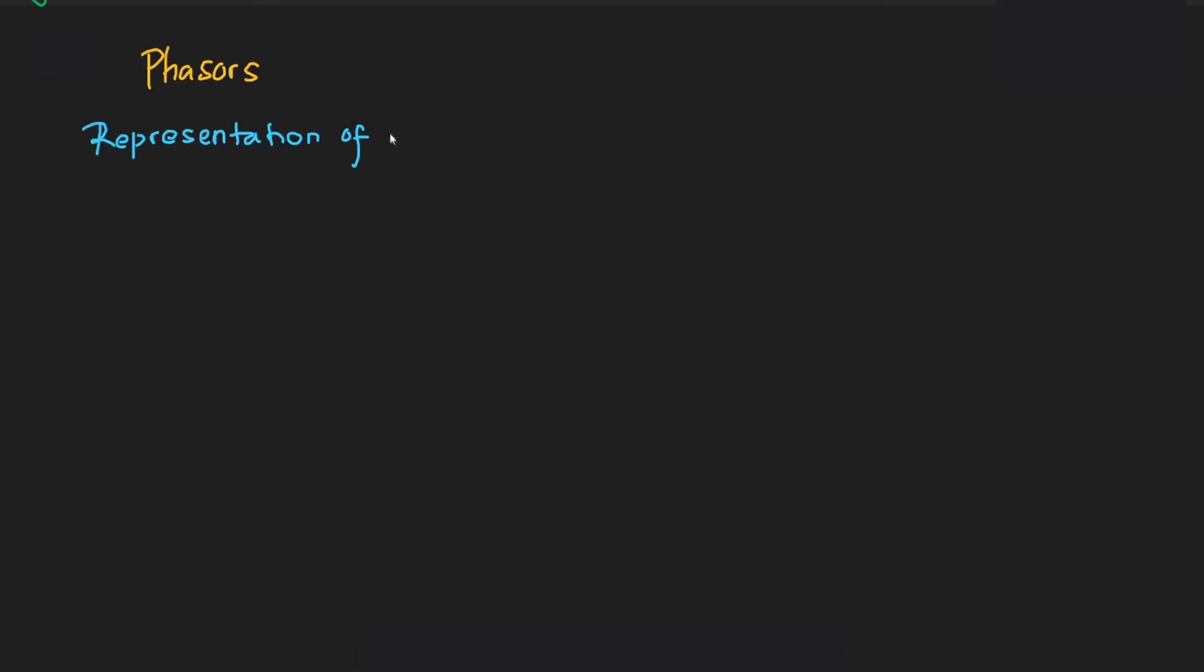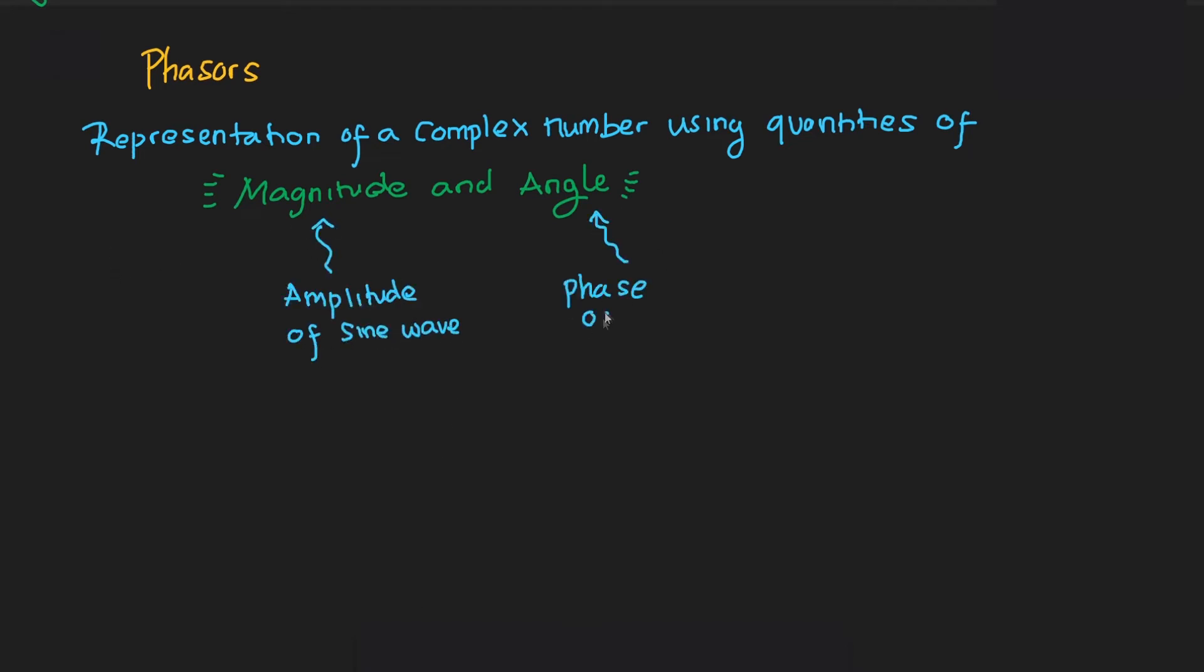This response is usually represented in complex numbers known as phasors, a quantity that has a magnitude and an angle. The magnitude of the phasor represents the amplitude of the sine wave, and the angle of the phasor represents the phase of the sine wave.